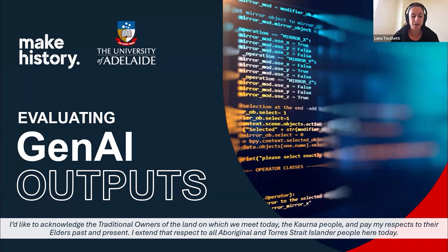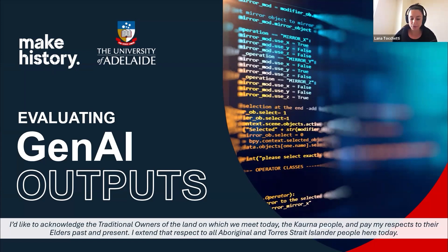Welcome to part nine of our weekly series that the library is presenting this semester. Each week we look at a different topic designed to give you a bit of an introduction to studying at university, and we do invite you along to the weeks ahead as well. But today we'll be looking at evaluating Gen AI outputs — a quick recap of what Gen AI is, how it generates its outputs, how these outputs can go wrong, and how you can begin to evaluate them.